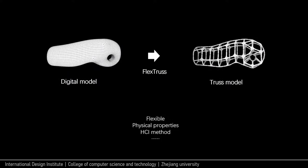Conventional 3D printing models with materials like PLA or ABS are difficult to shape-change physically. FlexTrust is designed to make flexible prototypes with threading and assembly by threading. By combining linear materials, it expands possibilities for physical properties and provides new HCI methods.